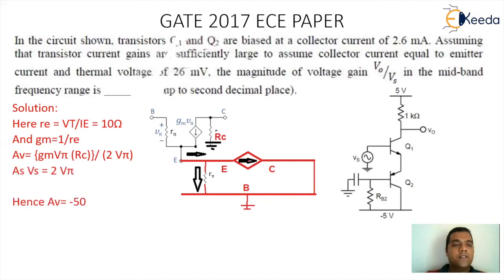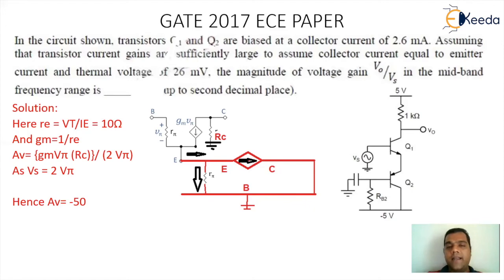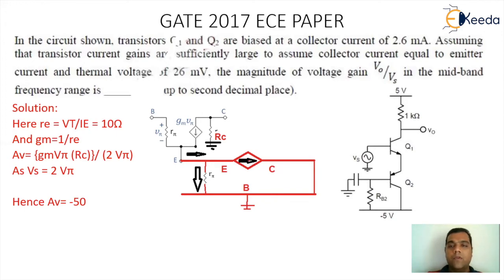On substitution, the value comes out to be minus 50. We have taken the magnitude, so the actual gain is 50. This is the final answer. Thank you.